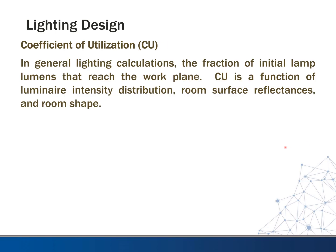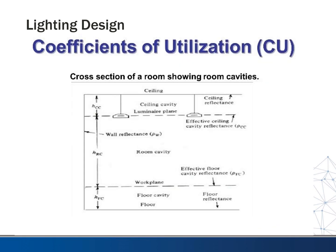Coefficient of Utilization (CU): in general lighting calculations, this is the fraction of initial lamp lumens that reach the work plane. CU is a function of luminaire intensity distribution, room surface reflectances, and room shape — so a lot of things can affect this coefficient of utilization.